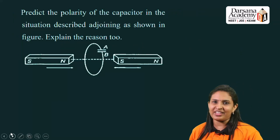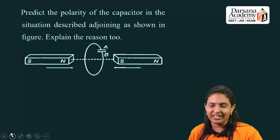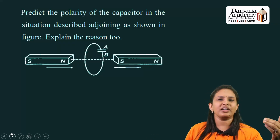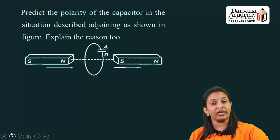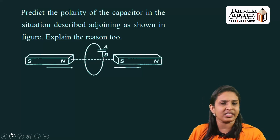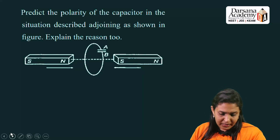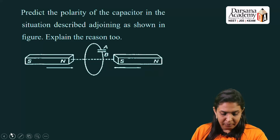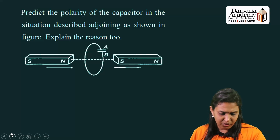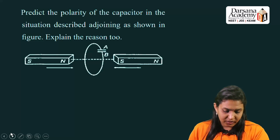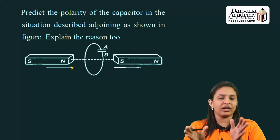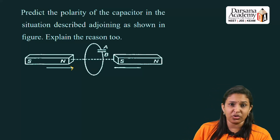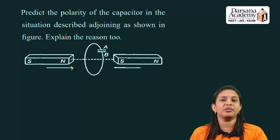Moving to the next question — a similar one, which is a previous year board exam question from NCERT. The question asks: predict the polarity of the capacitor in the situation described in the figure, and explain the reason. There are two magnets with north and south poles, and the north pole is moving towards the coil.